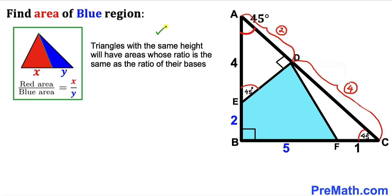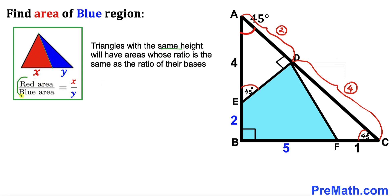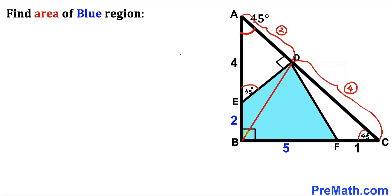Let's recall this crucial fact: triangles with the same height have areas whose ratio equals the ratio of their bases. In a given triangle with two sub-triangles of the same height, if the base of one is x and the other is y, then the ratio of their areas equals x divided by y. We will apply this same concept to our problem.